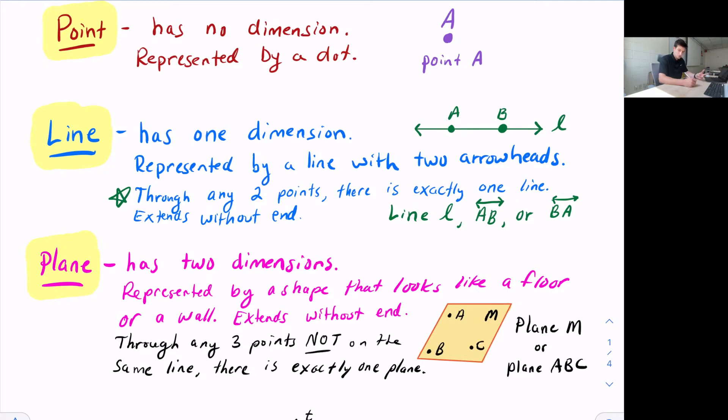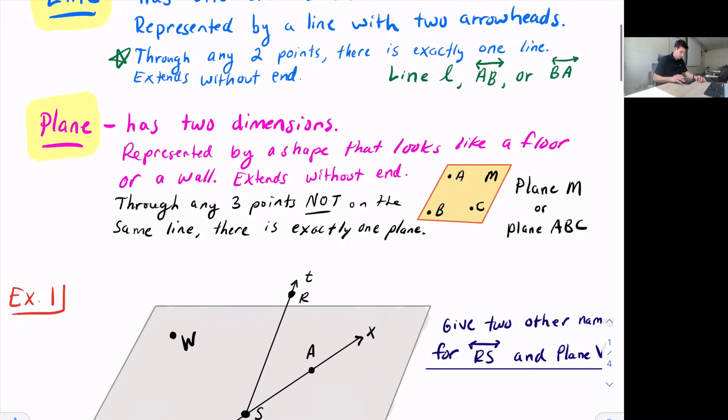A plane has two dimensions, represented by a shape that looks like a floor or a wall, and it also extends without end in all four directions. Through any three points not on the same line, there is exactly one plane. So here we have points A, B, and C. They are not collinear. Collinear means on the same line, so these three points are not on the same line. So we could call this Plane M or Plane ABC.